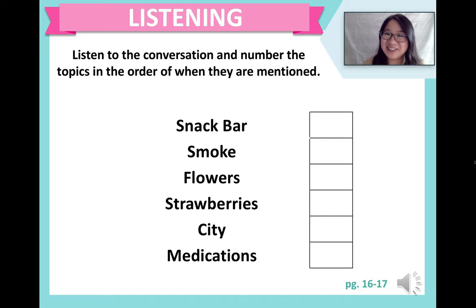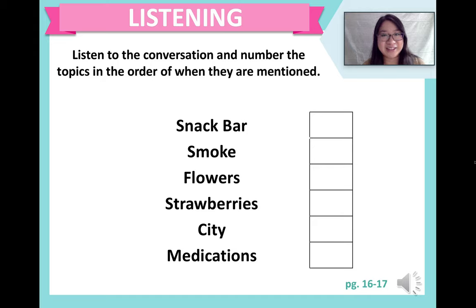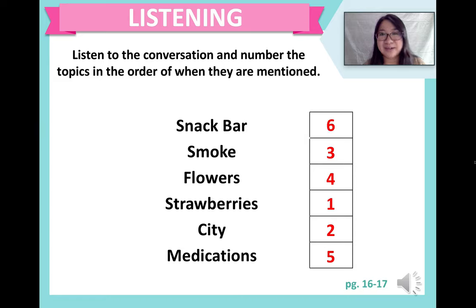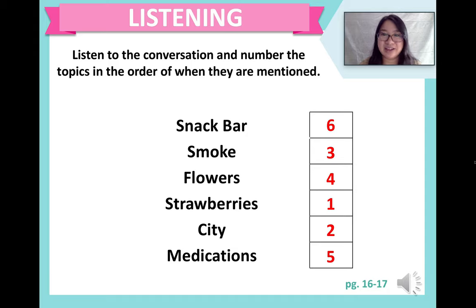You must know this listening file really well by now. Let's check our answers and see which topics were spoken about in which order. The first topic is strawberries — Elena mentions having an allergy to strawberries. Number two: city. Number three: smoke. Number four: flowers. Number five: medications. And finally: snack bar. Once they start talking about snack bars, they get into the topic of food allergies, which is the main topic of this conversation.